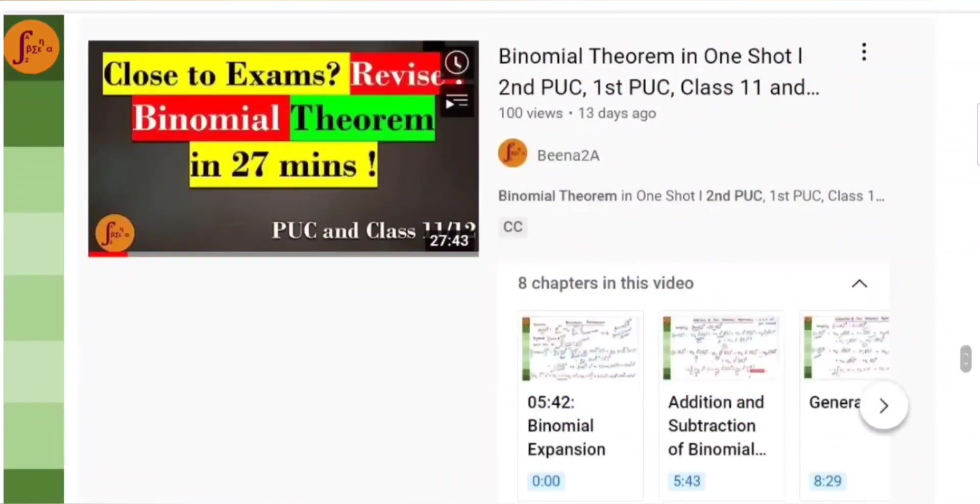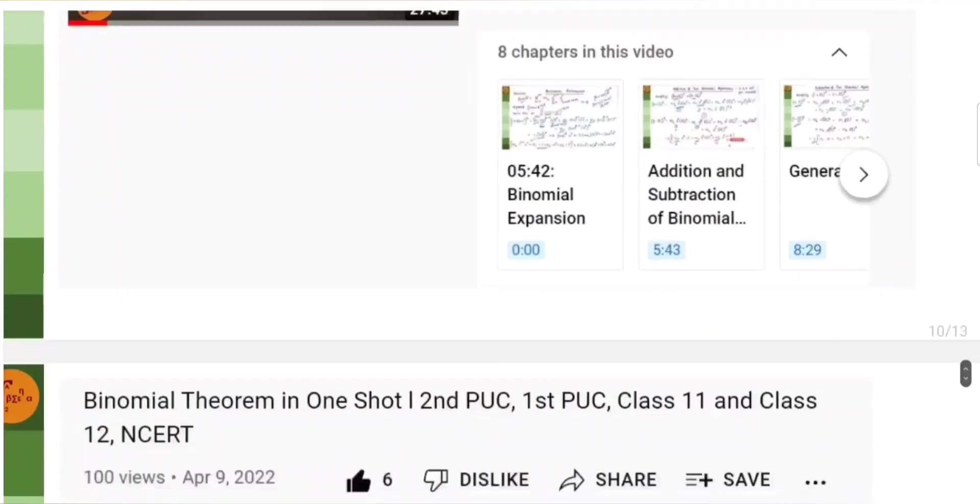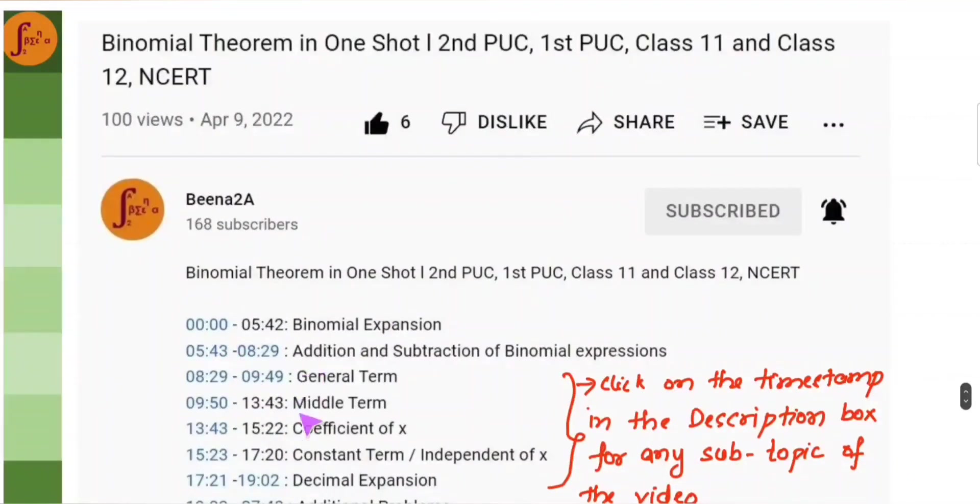For example, say you have binomial theorem. There are chapters created like this. You can open the binomial theorem video, click on the description box, you will see multiple timestamps. Click on those timestamps for any particular subtopic. Say, for binomial theorem, you have subtopics for general term, middle term, coefficient, constant term, decimal expansion. Just click on these timestamps given in the description box. It will take you to that particular subtopic. This is essentially so that you can save your time and quickly go through that particular revision.